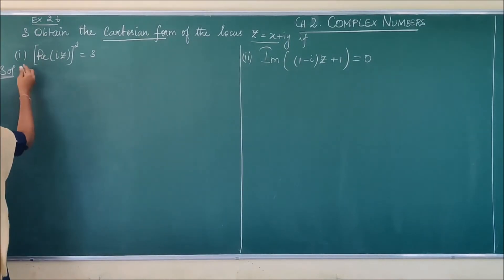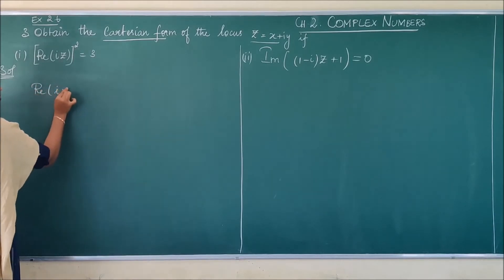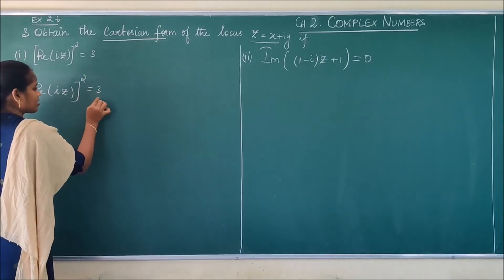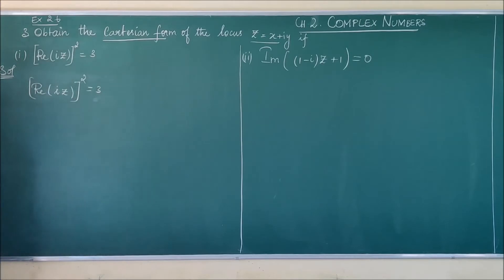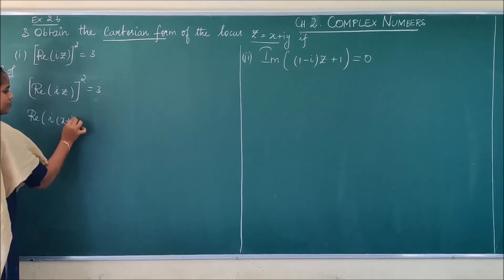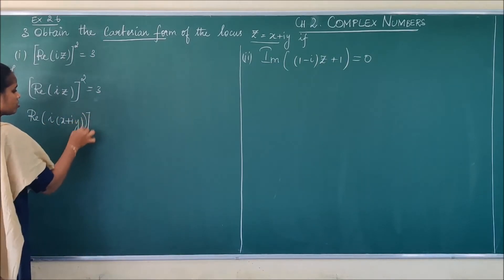Now I am going to substitute z as x plus iy. What I have given is real part of iz whole square equals 3. First, what I am going to do is real part of i into z, which is x plus iy, the whole square equals 3.